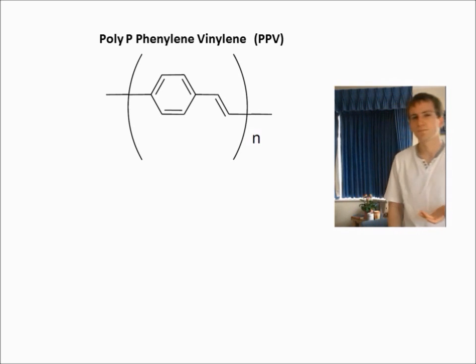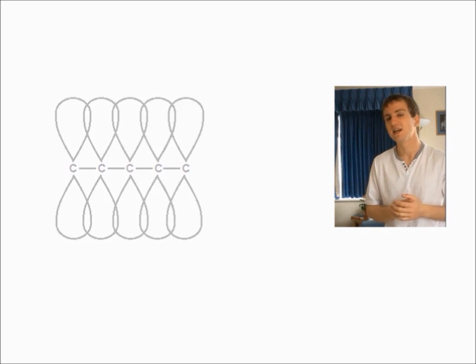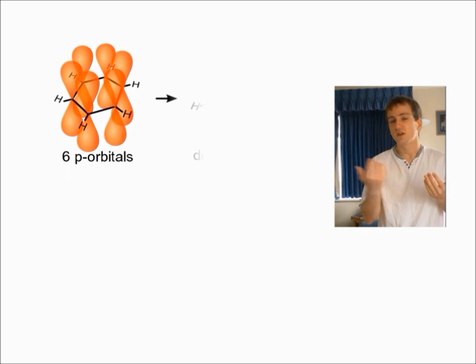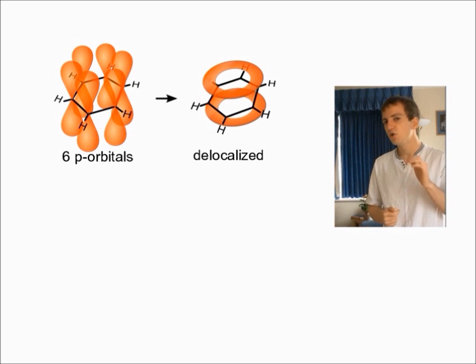But what is conjugation? Well, a conjugated system is a system of connected P-orbitals, in which electrons can be delocalized. A fine example is benzene, where six adjacent P-orbitals have overlapped to form the delocalized ring system. And we can notate this conjugation of benzene in one or two ways.